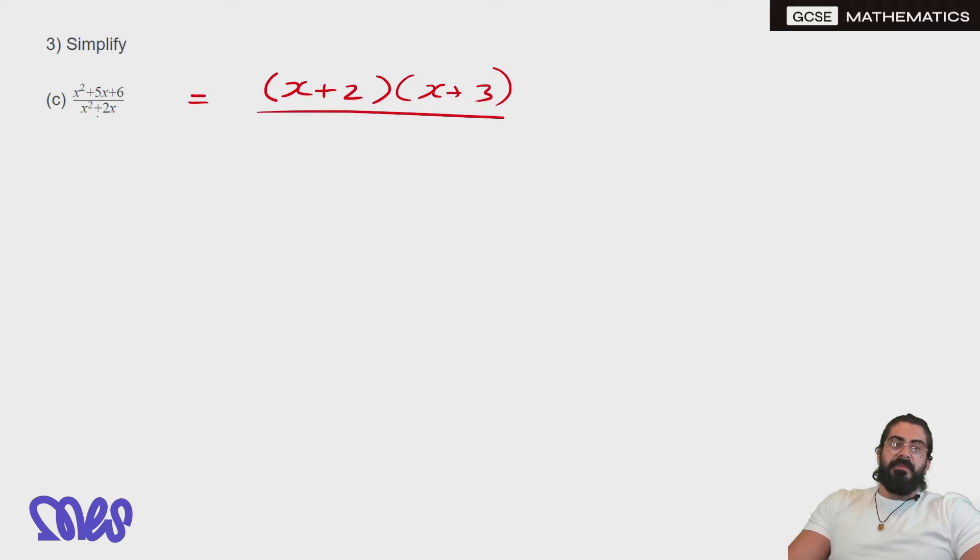Now remember, you could have factorized the bottom first. You can take out an x. You'll be left with x plus 2. So that's the basic factorizing here. We can cancel out the x plus 2's and we're left with x plus 3 over x as your solution.